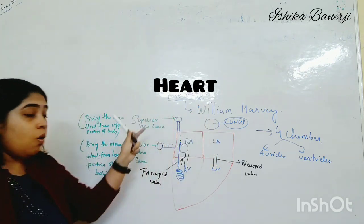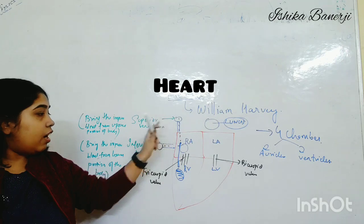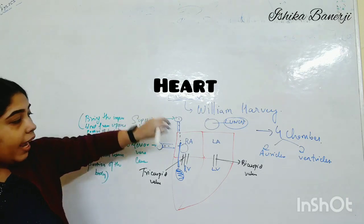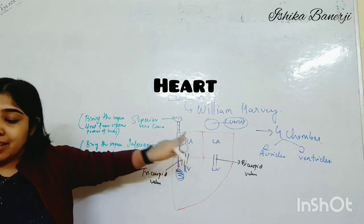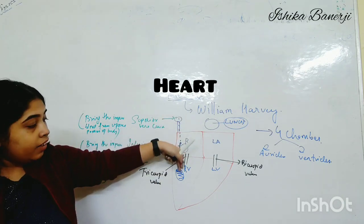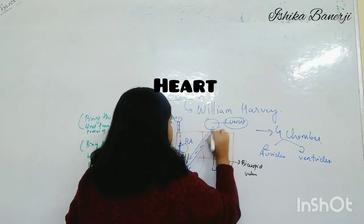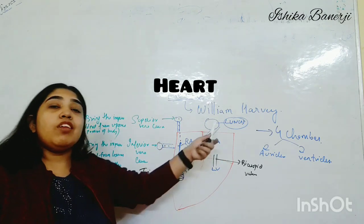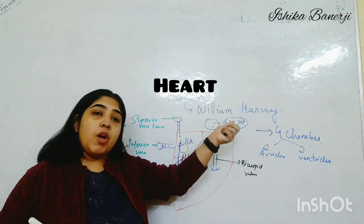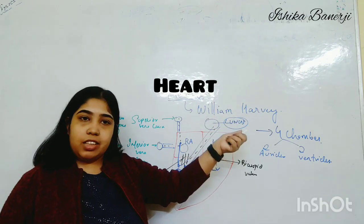So, to recap: impure blood from the upper portion of the body comes through the superior vena cava, and impure blood from the lower portion comes through the inferior vena cava. Both enter the right auricle, then pass to the right ventricle, and from there go to the lungs. In the lungs, oxygen is added to this blood and it becomes pure.